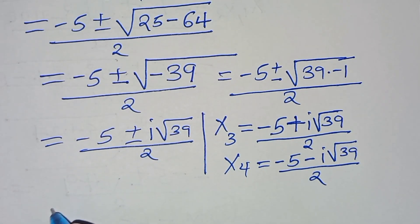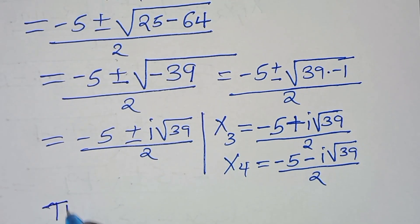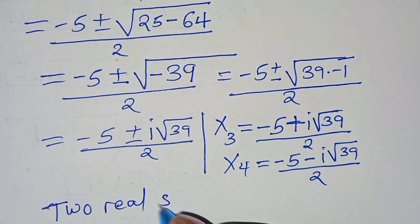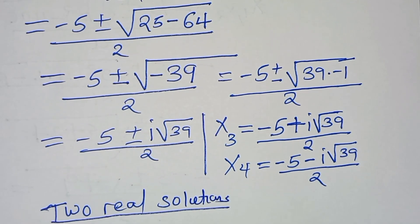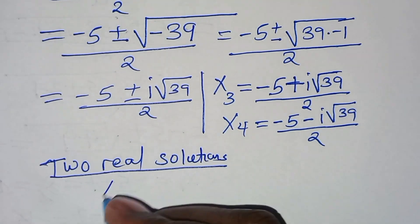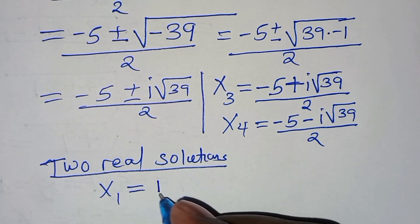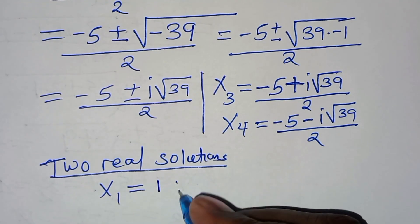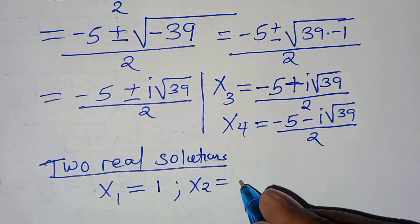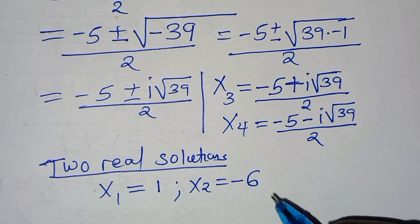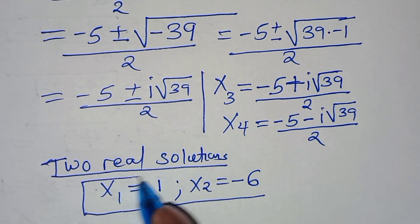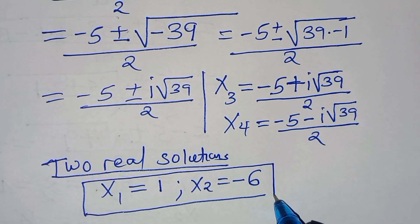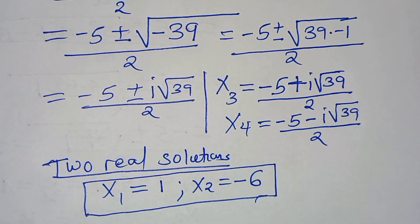We only have two real solutions: x₁ = 1 and x₂ = -6. Let's verify these satisfy the original equation.